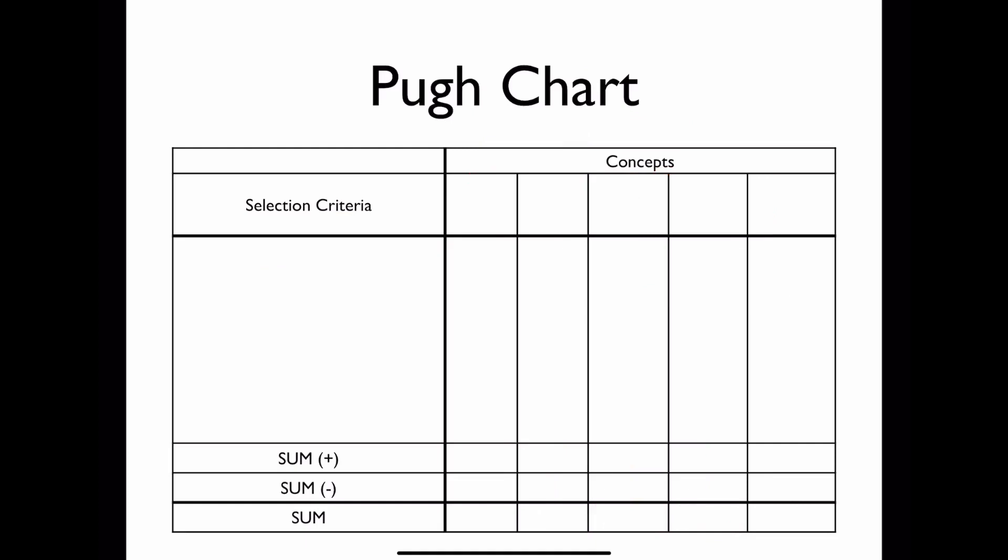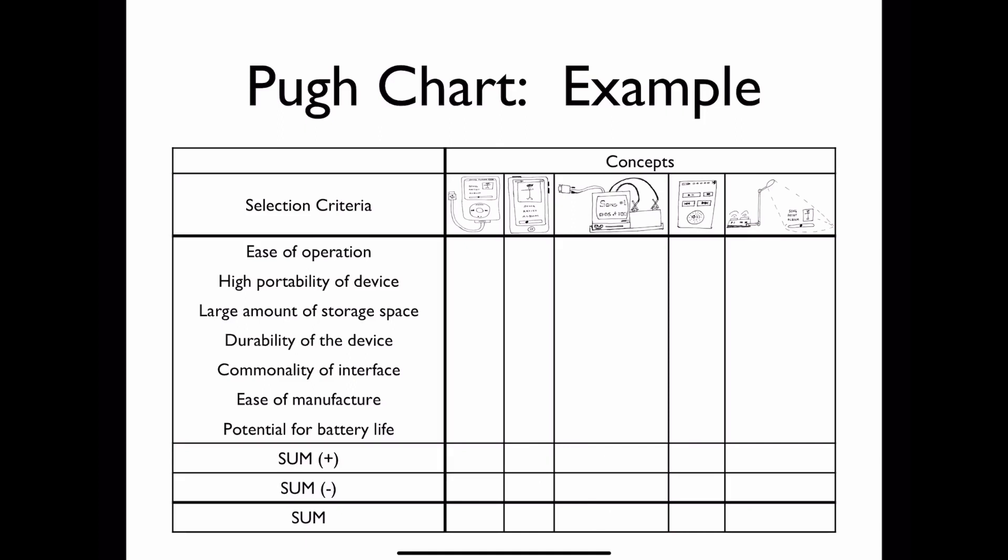So let's return to our examples of our music players and look at the five concepts that were generated. To start with, this one right here is going to be our datum because it's in the initial position, and we're going to compare against our other concepts, A, B, C, and D.